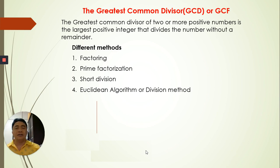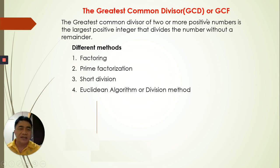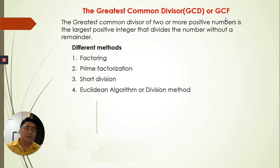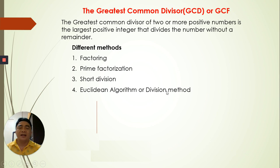We have here the greatest common divisor, or the GCF. GCD or GCF are just the same. And we are also going to have the LCM, least common multiple. So GCD is about the factor, and LCM will be about the multiple. That's how important factors and multiples are in mathematics.